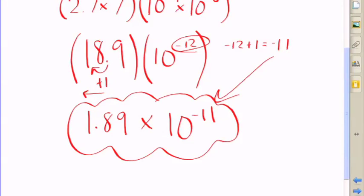Again, we changed the exponent by 1, we added 1 because we moved to the left one space in the decimal of the 18.9. If we had moved two spaces, we would have added 2 to the exponent of 10. So that's how it works.